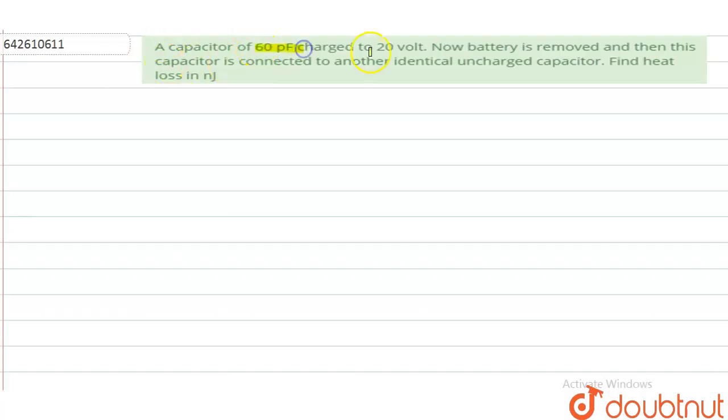of 60 picofarad charged with 20 volts. Now battery is removed, then this capacitor is connected to another identical uncharged capacitor. Find the heat loss in nanojoules. So according to the question, there is a capacitor of 60 picofarad,